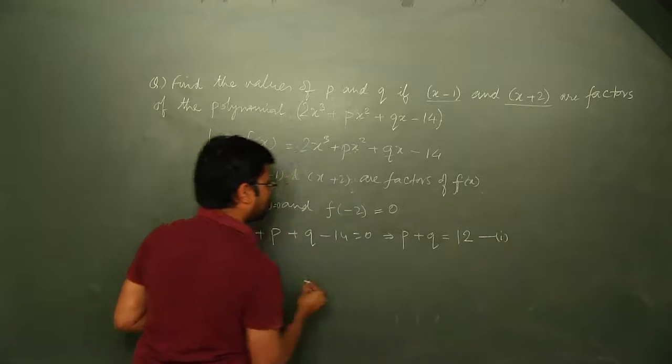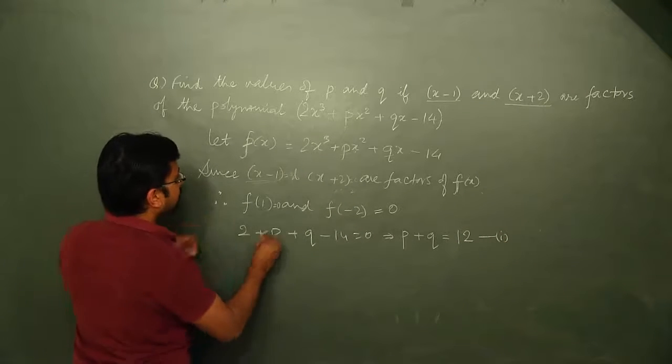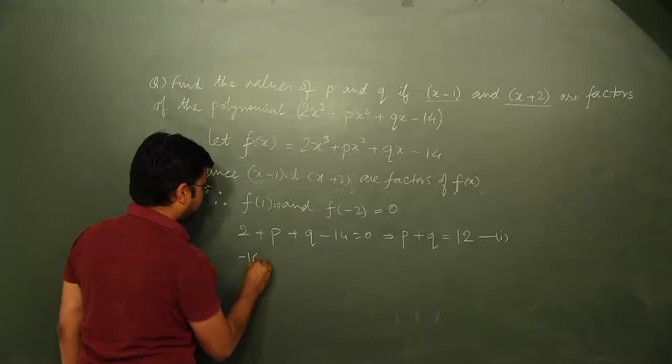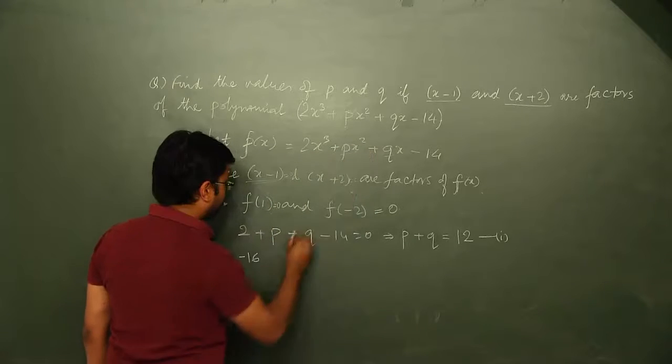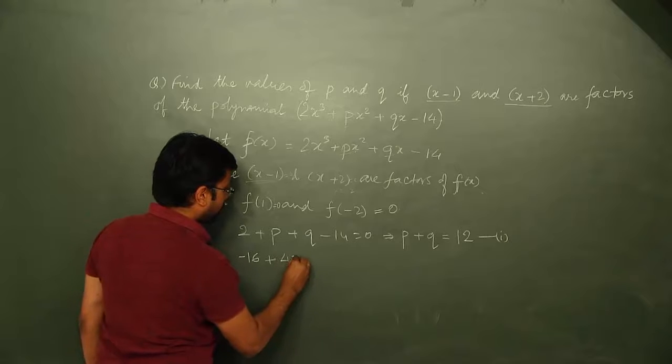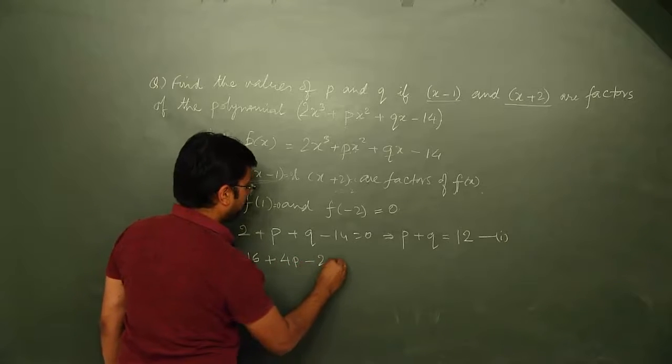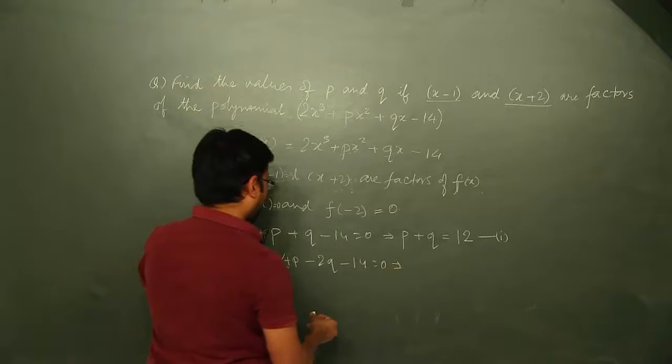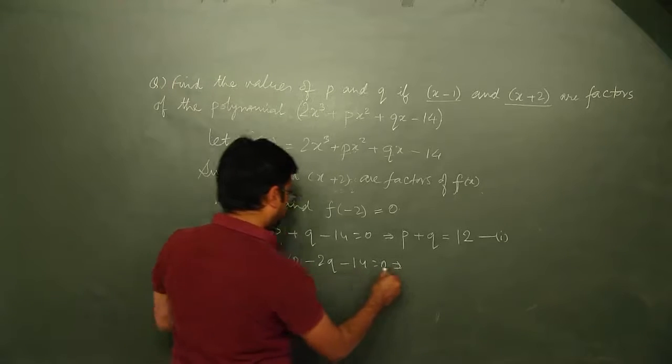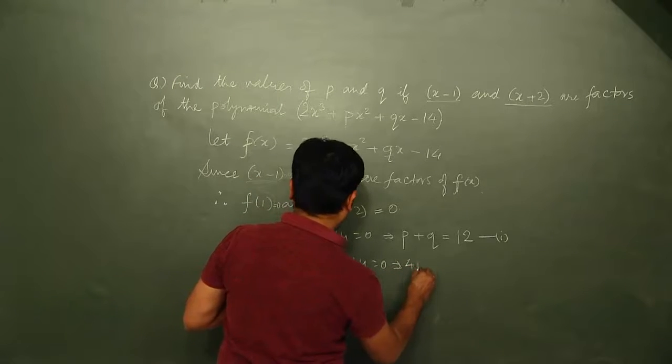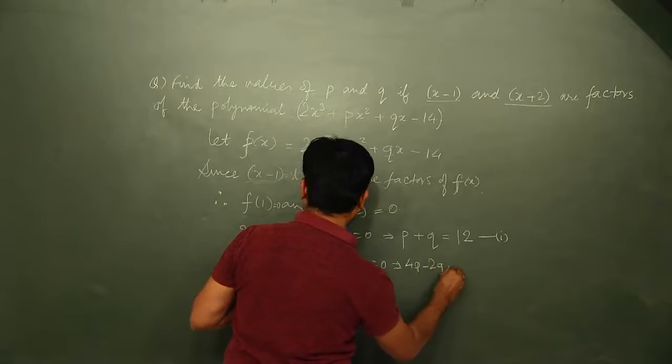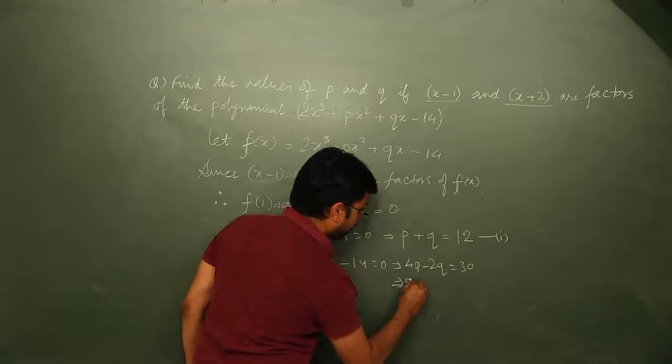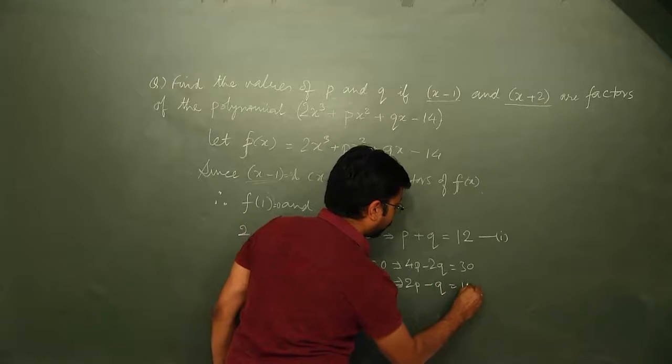That's the first equation. The second is minus 2 cubed is minus 8, so minus 8 into 2 is minus 16 plus 4p minus 2q minus 14 equals 0, which implies 4p minus 2q equals 30. Dividing by 2 on both sides, we get 2p minus q equals 15.